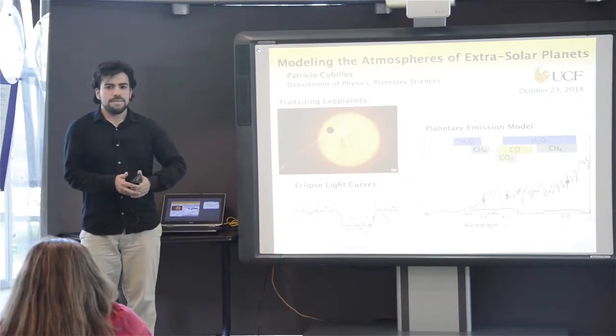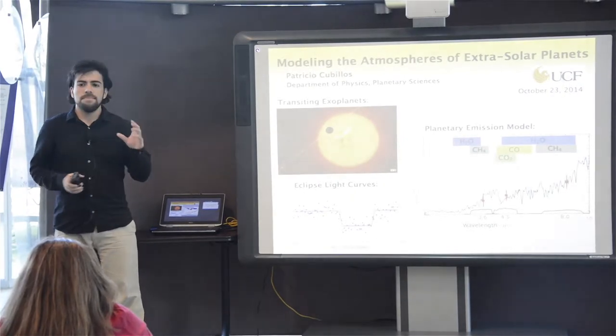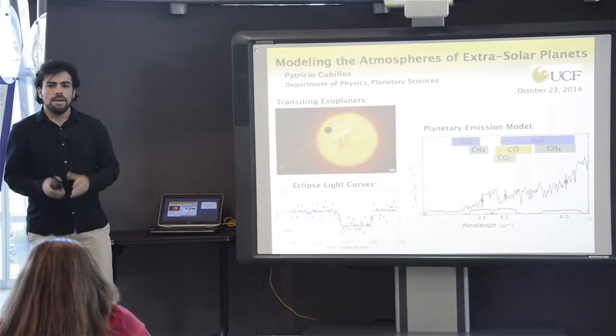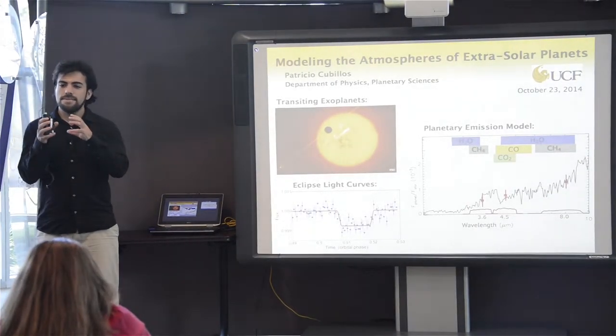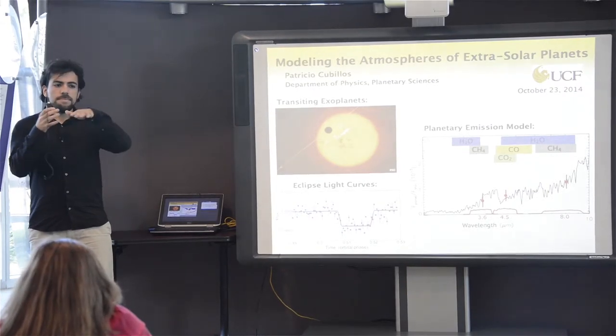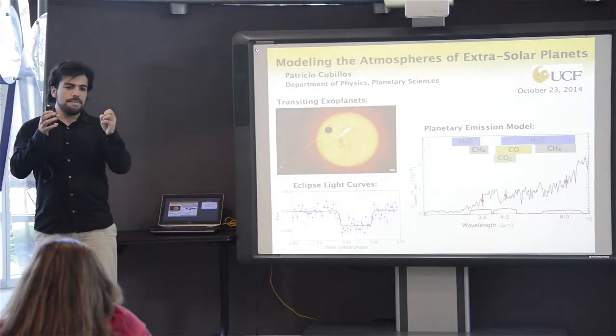What our group studies are a specific subgroup of these planets, which are the transiting exoplanets. These are planets where the orbit of the planet around their host star is specially aligned such that we see the planet in front and behind the star.